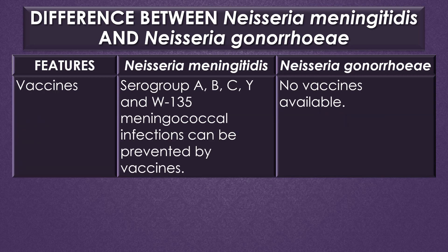In meningococci, serogroups A, B, C, Y, and W135 infections can be prevented by vaccines, but for gonococci no vaccines are available. That's all about the difference between meningococci and gonococci. Dear viewers, thank you for your support. Thank you.